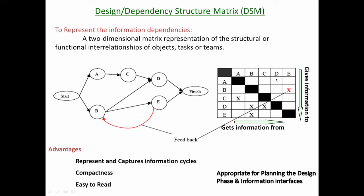What the design structure matrix does is take a network representation and allow feedback relationships. This whole network is then represented in the form of a matrix. Wherever there is a relationship, there is an X mark. Where there is a feedback loop, the X mark is above the diagonal; where all relationships are feed-forward, the X mark is below the diagonal. This gives a clue to the design team as to where feedback loops exist and how they should be managed. The matrix representation is much easier to draw and understand than a network, and matrix algebra operations can extract a lot of information on dependencies between design teams.